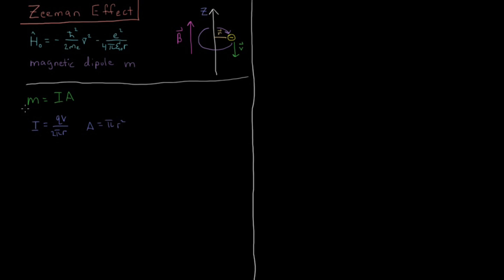So if we multiply those two together, what we're going to get is that this magnetic dipole is going to end up being the charge of the particle times its radius from the axis times its velocity over 2.